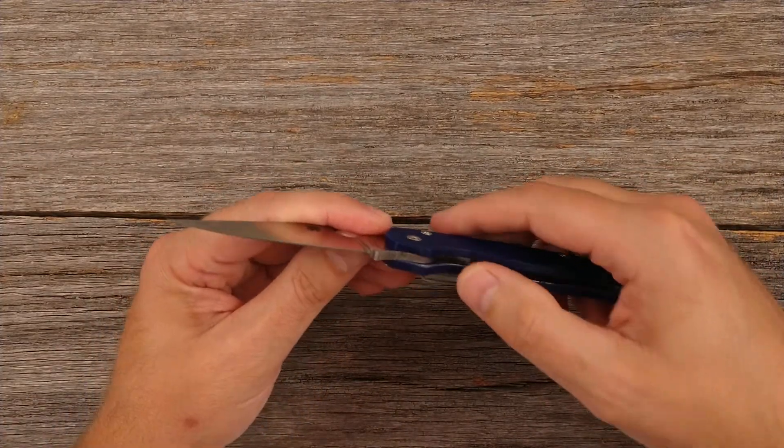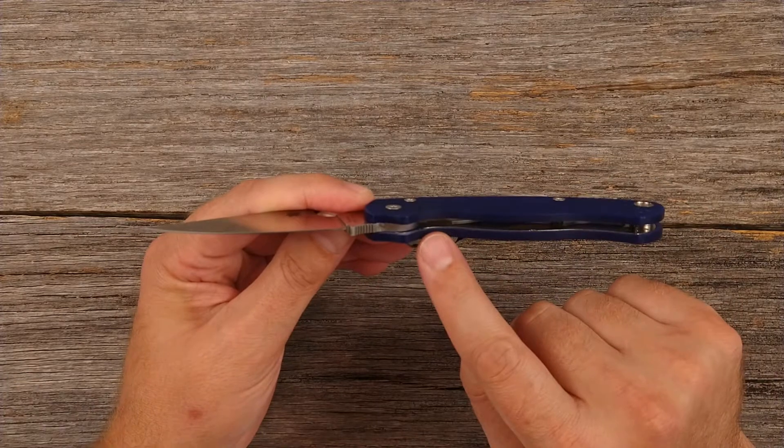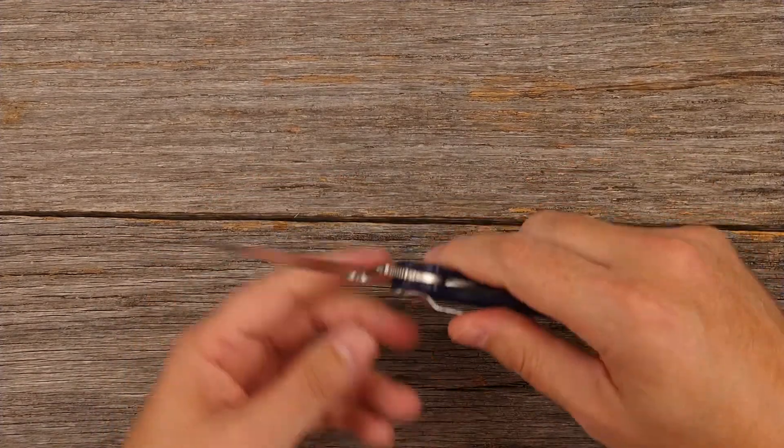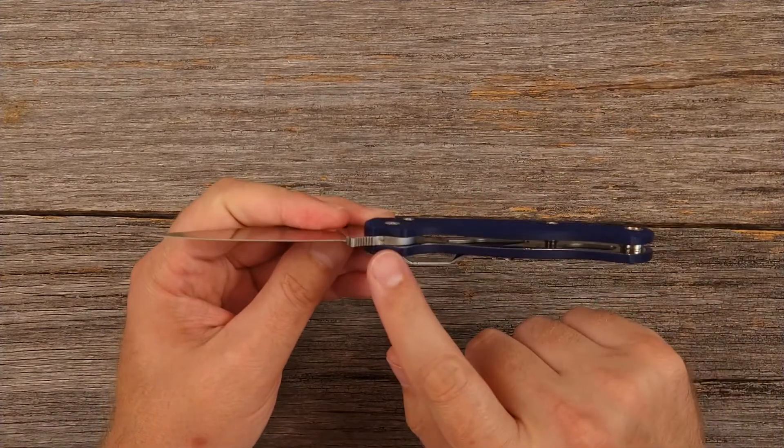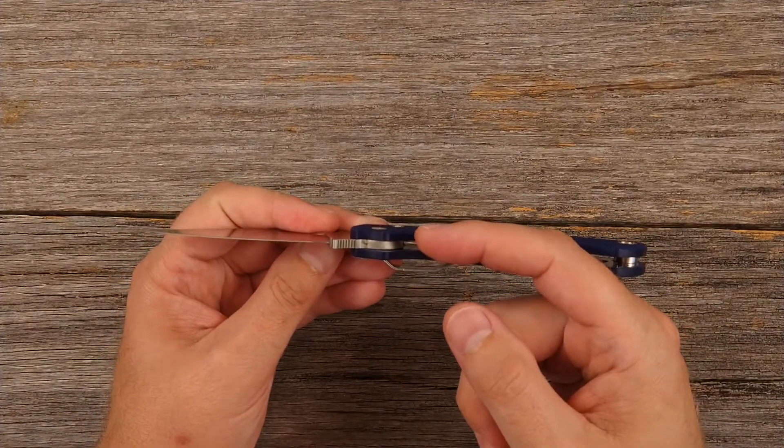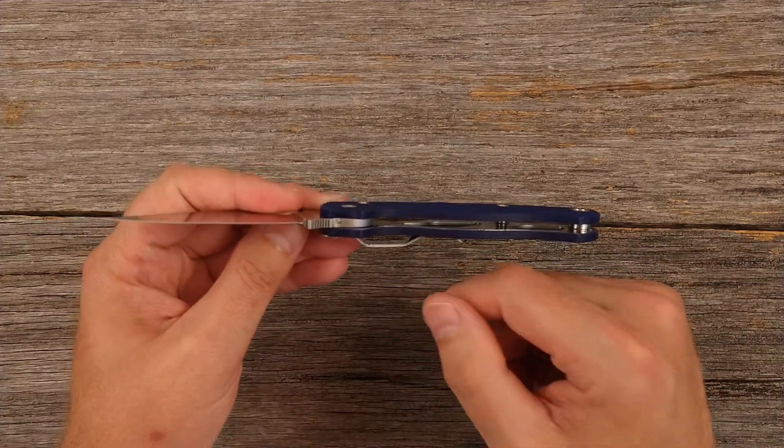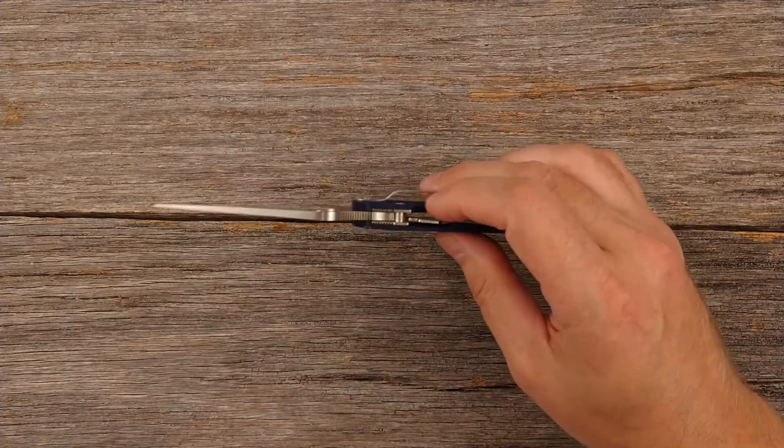A liner lock, which is on this side, is basically just something that kind of slides over to the middle of the blade. But if you put a lot of pressure, like a spine whack or something that's putting pressure on that blade, on a liner lock, it can tend to want to kind of push that out of the way and close, or it can even buckle where it'll actually bend the liner itself.